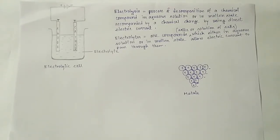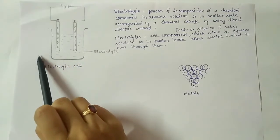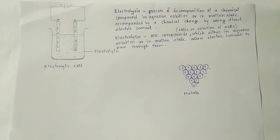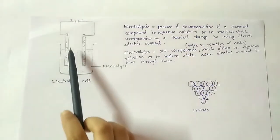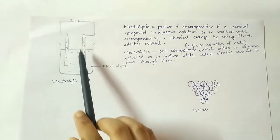An electrolytic cell is a non-conducting vessel containing two electrodes immersed in a solution of electrolyte, used to bring about a chemical reaction. The electrodes - anode and cathode - are two metal plates, wires, or graphite/carbon rods immersed in the electrolyte. A battery is connected where the positive end is attached to the anode and the negative end is attached to the cathode.